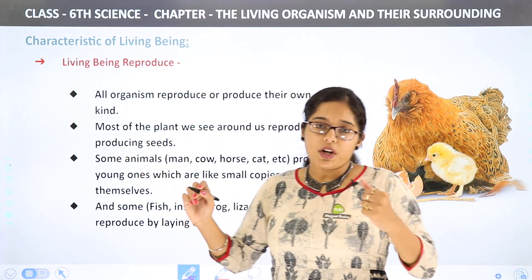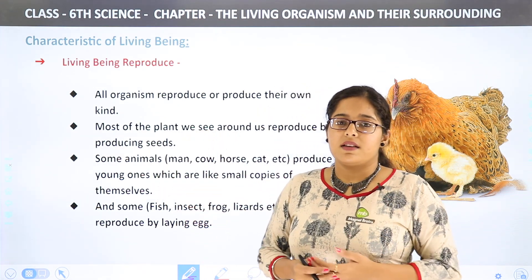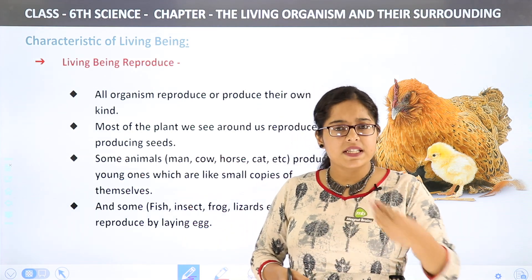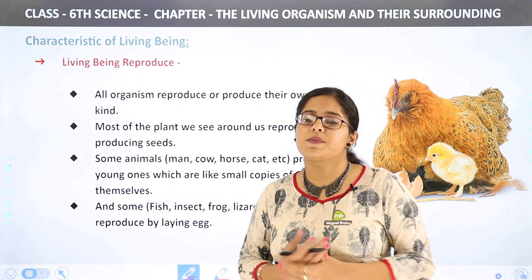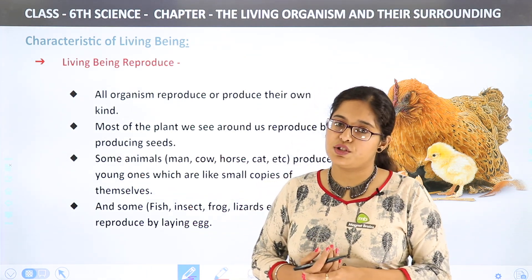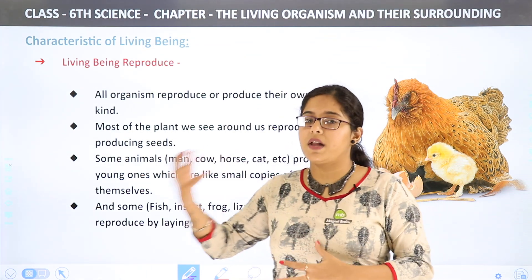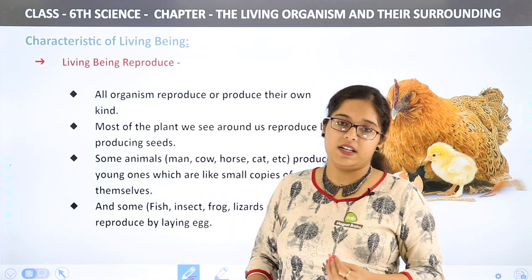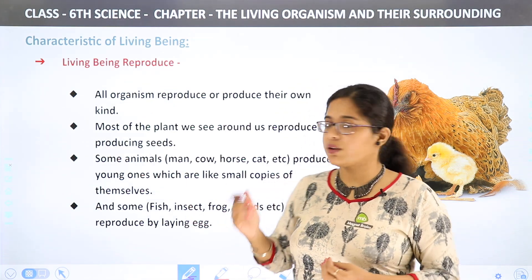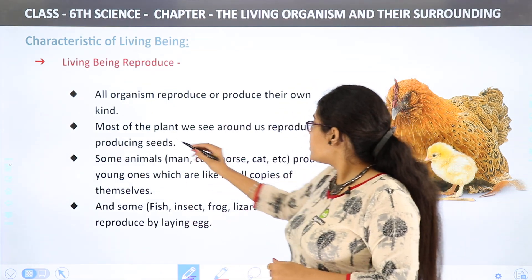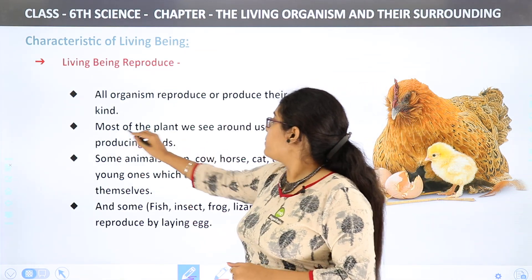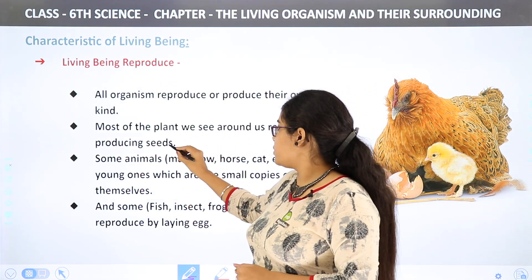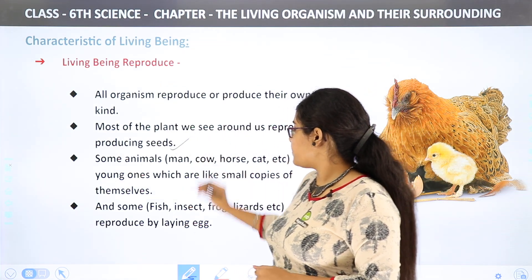How does reproduction happen in plants? In the form of seeds. New plants are developed and grown from seeds. Most of the plants we see around us reproduce by producing seeds.